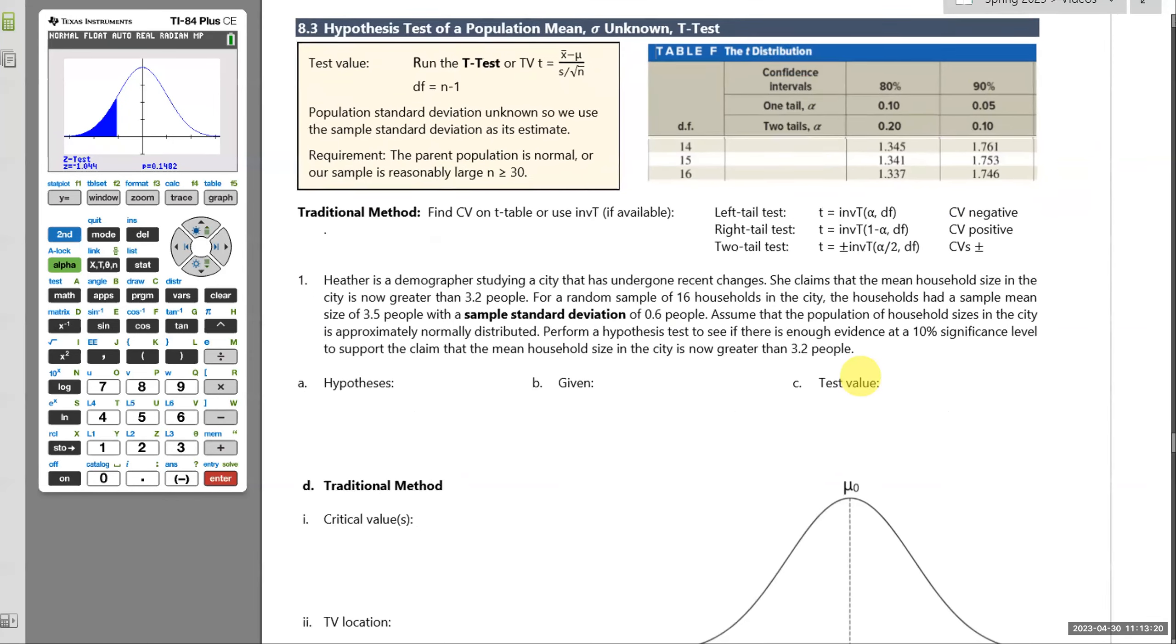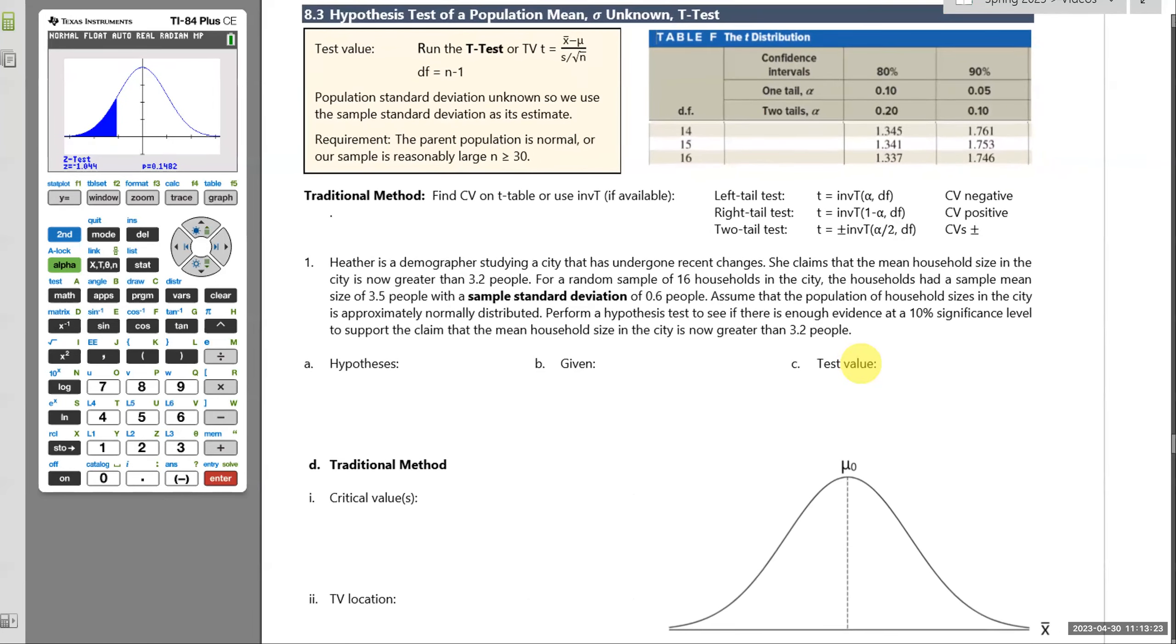It says Heather is a demographer studying a city that has undergone recent changes. She claims that the mean household size in the city is now greater than 3.2 people. So she takes a random sample of 16 households in the city. And for these households, the sample mean came out to be 3.5 with a sample standard deviation of 0.6. Obviously putting it in bold here to really emphasize this was just the standard deviation for that sample. So that's going to be our lowercase s sample standard deviation.